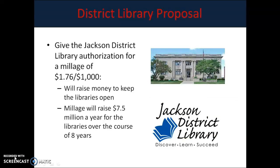The last proposal is for the Jackson District Library. The Jackson District Library is trying to get authorization to raise a millage of $1.76 per $1,000 of taxable income, in hopes of keeping the libraries open and programs going. This increase in the millage will raise nearly seven and a half million dollars a year for the libraries over the course of the next eight years.